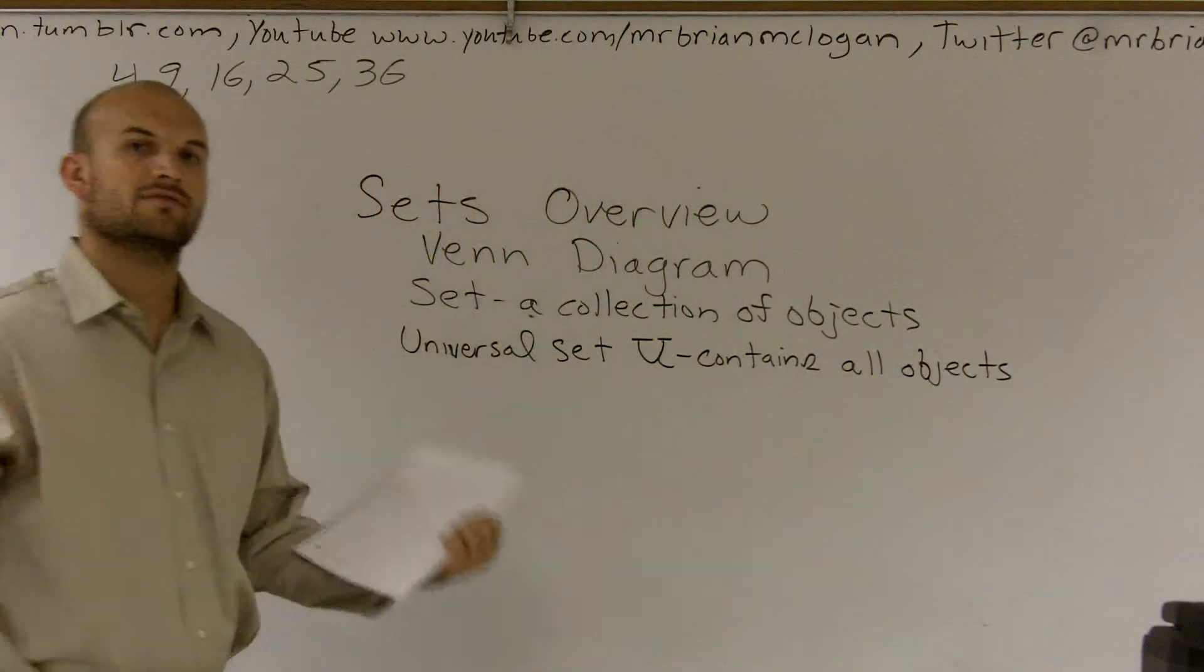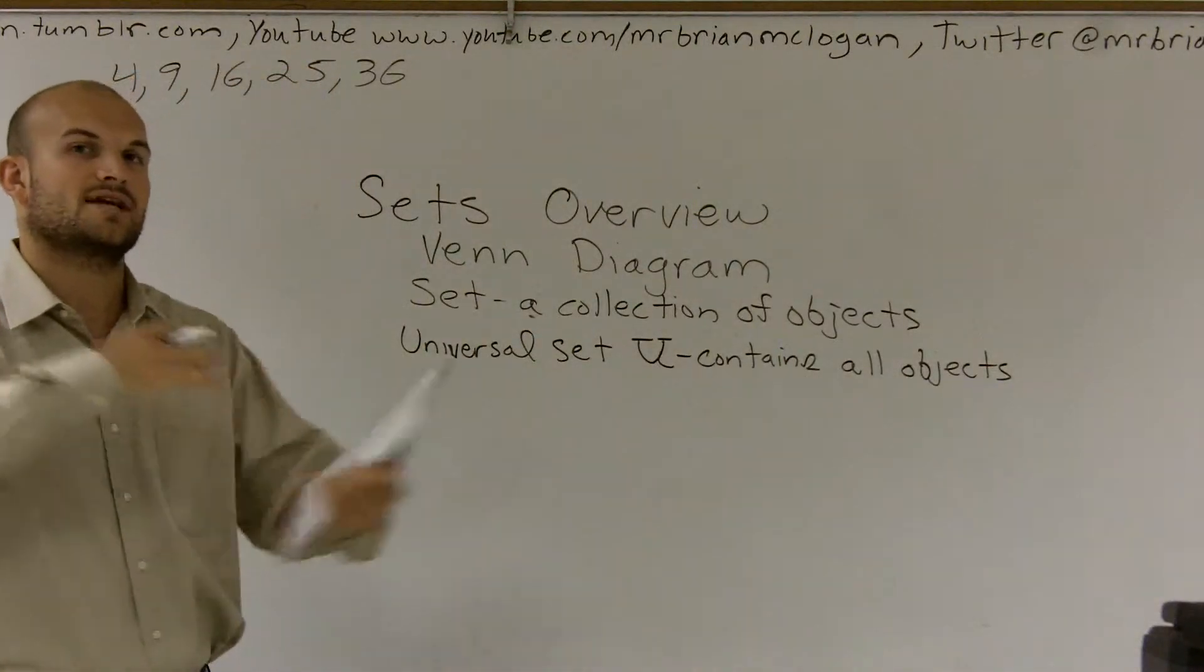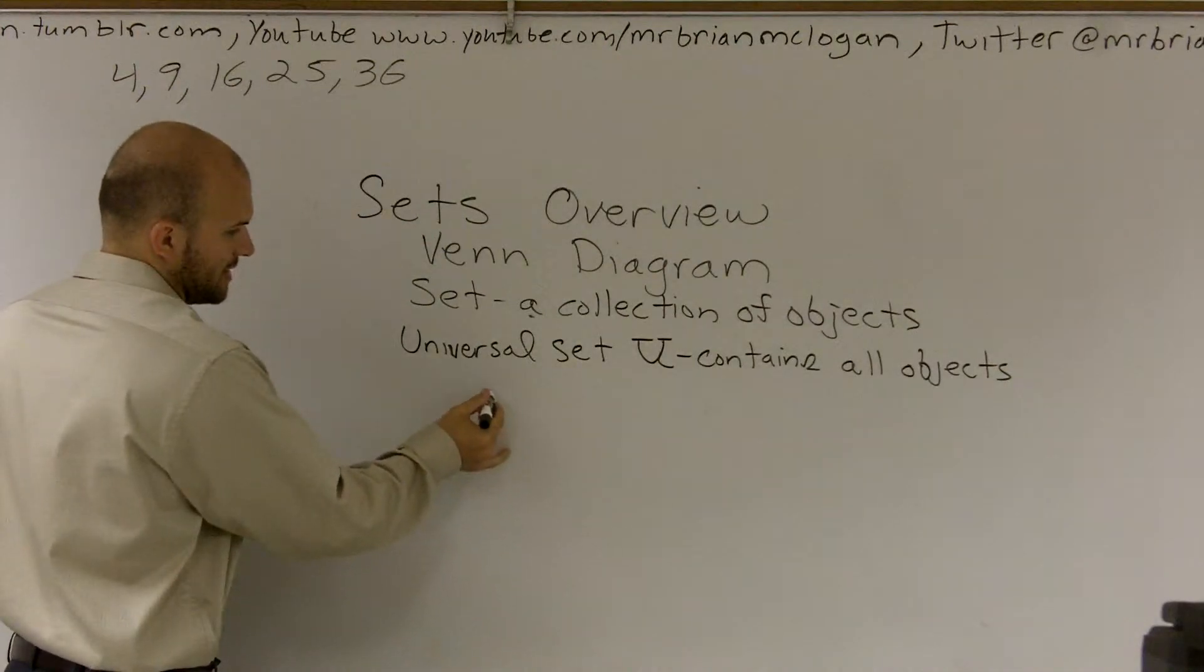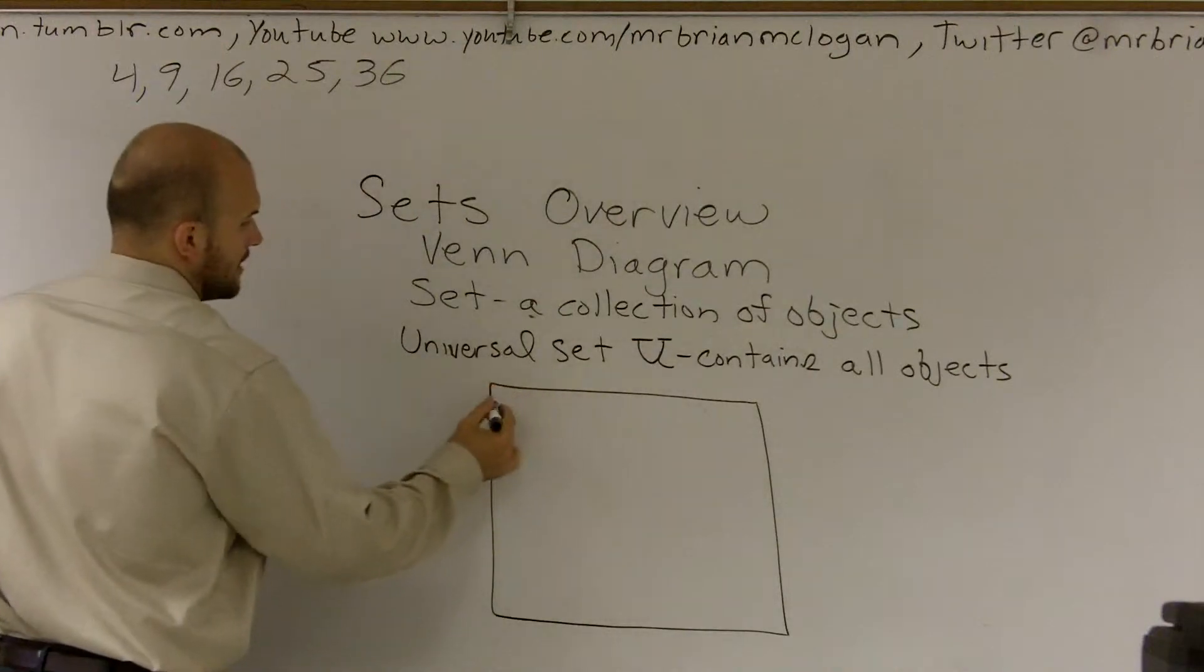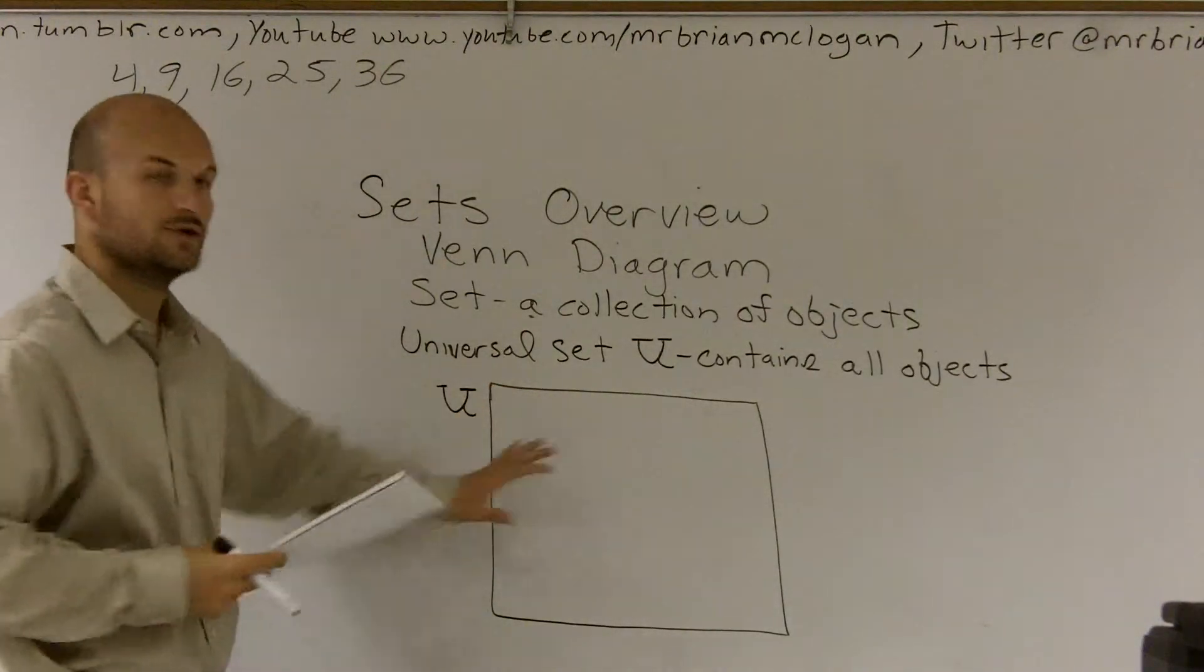We like to think of the universal set, if you think of the universe contains all the planets and everything, a universal set contains all the sets and everything, all of the objects. So I'm going to create a nice Venn diagram. The first thing I'm doing is creating the universal set, and I'm going to write the label right there. So this is my universal set.